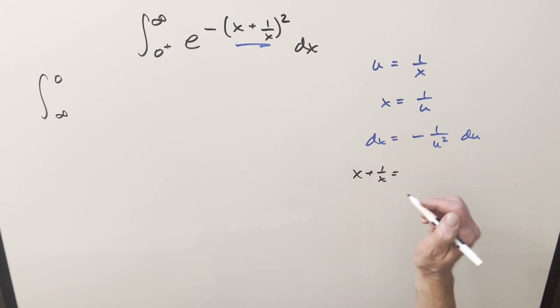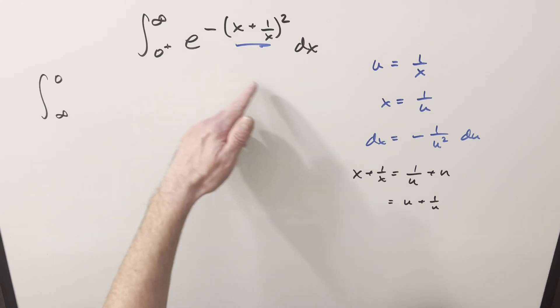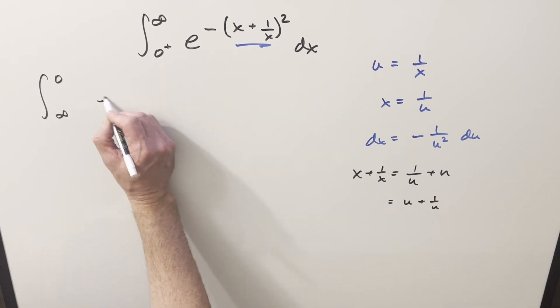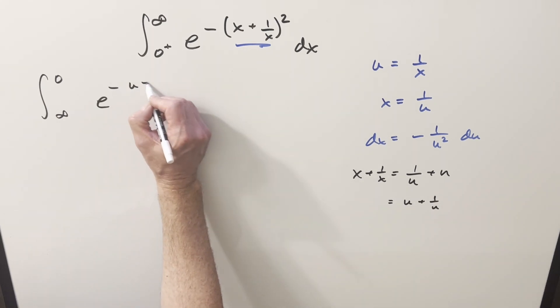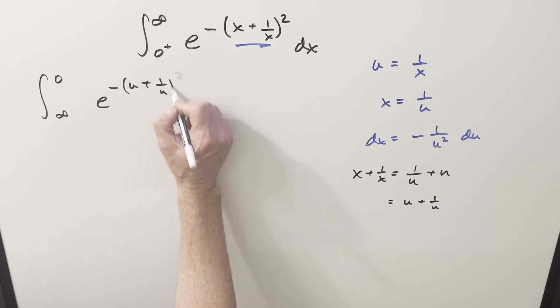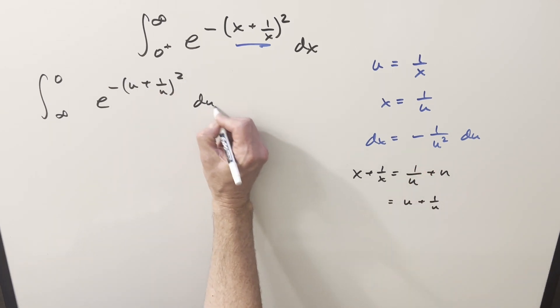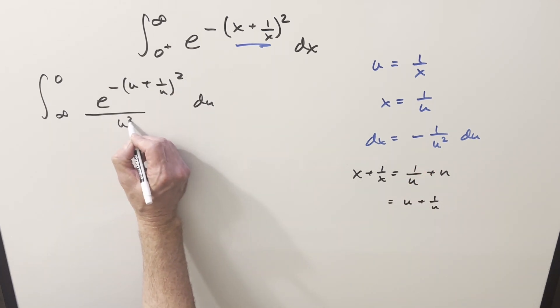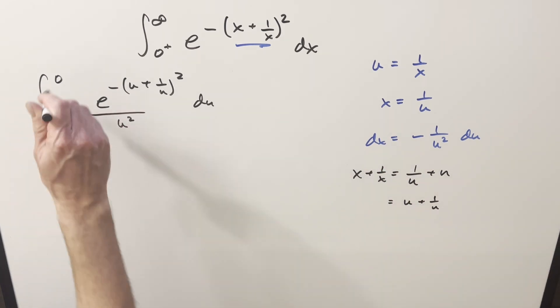So x plus 1 over x, x is going to be 1 over u, and 1 over x is going to be u. But what happens, I can rearrange this and write it like this. So nothing changed except for the variable name. And so when I write this, we can just write it as e minus (u plus 1 over u). And then our dx is this. I'll bring the u squared into the denominator, but let's use this minus sign just to flip the bounds around so we can get it back to like this where we're going from 0 to infinity.